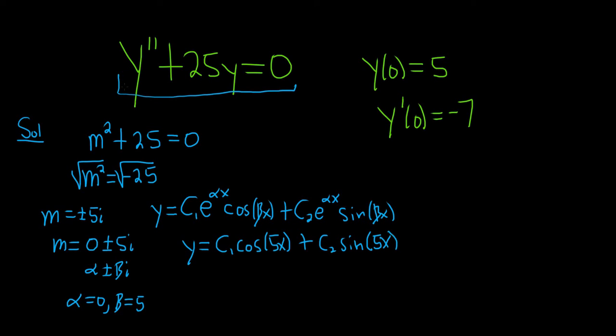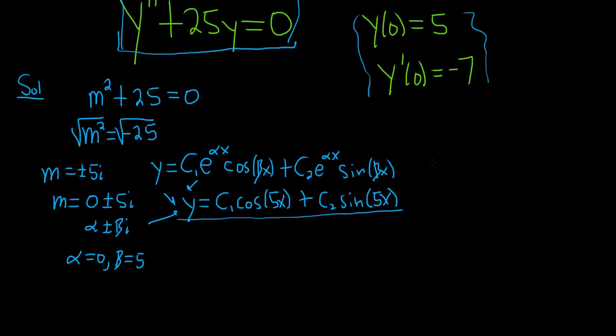This is the general solution to this DE, but we have two initial conditions, making this an initial value problem. We'll use these conditions to pick a particular solution from the infinite family of solutions. There are infinitely many solutions because c₁ and c₂ can vary; this lets you pick a particular one.